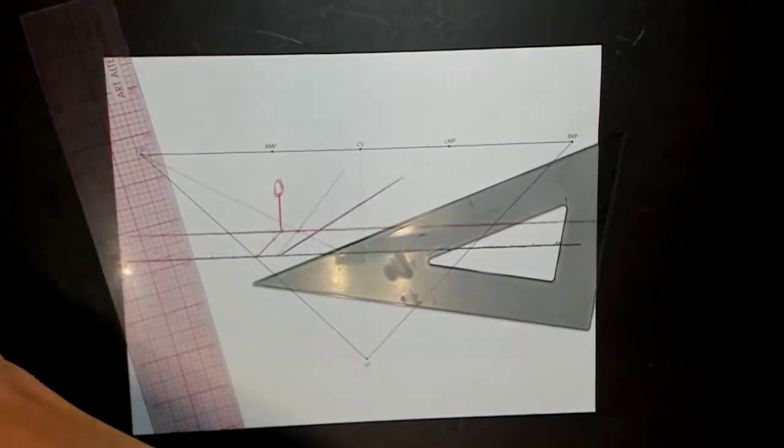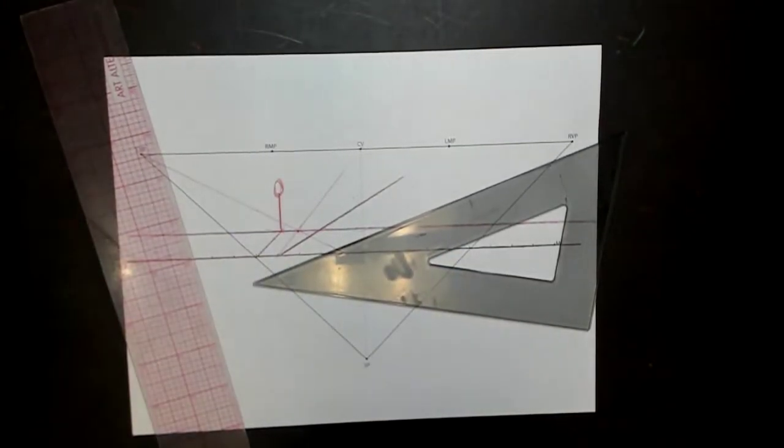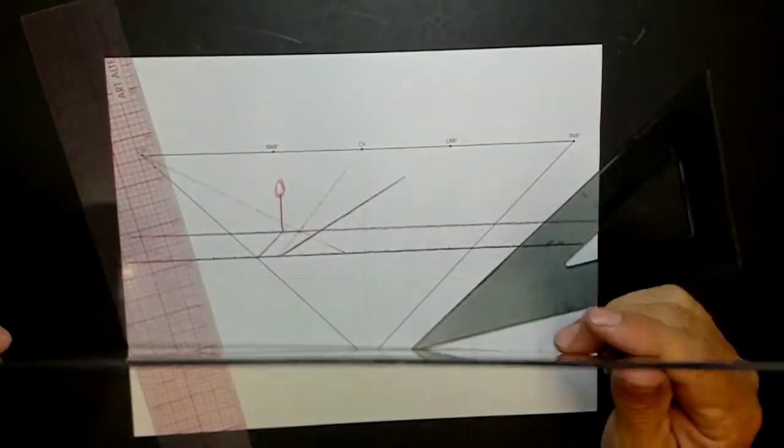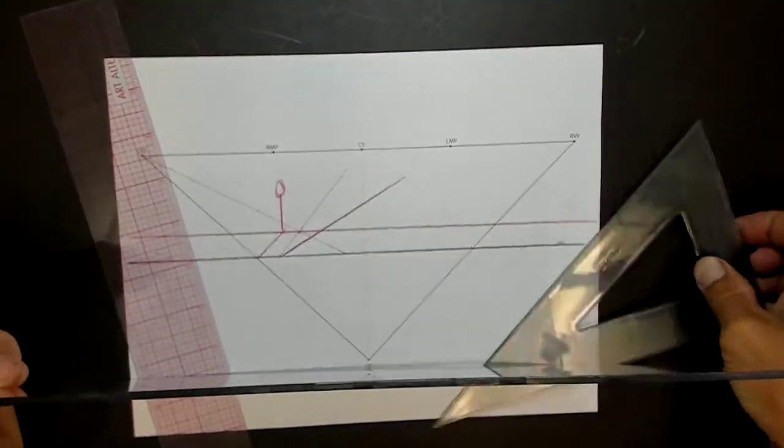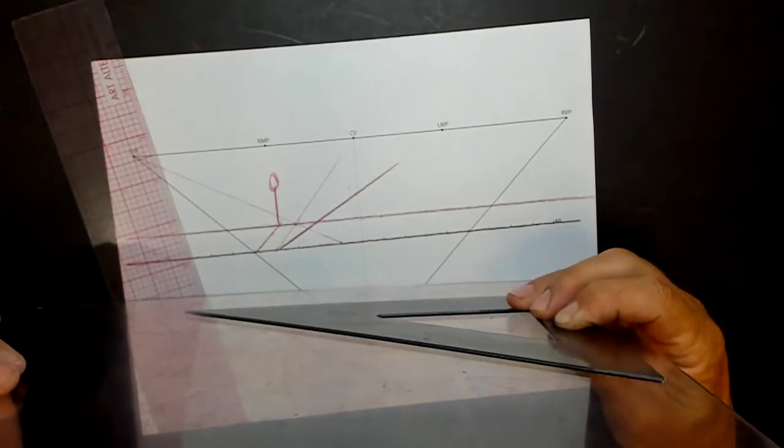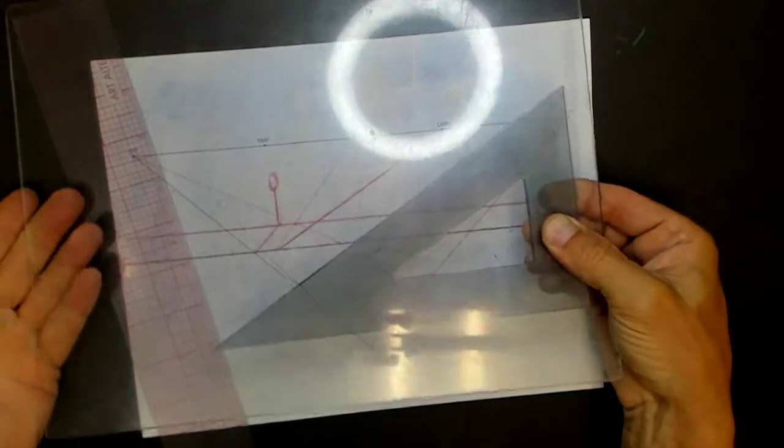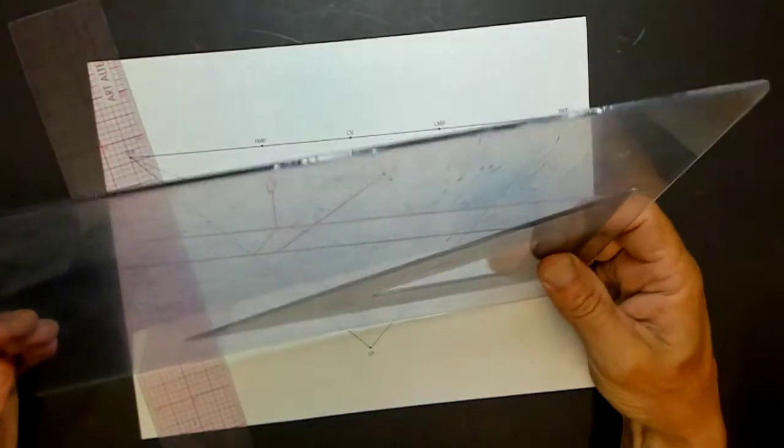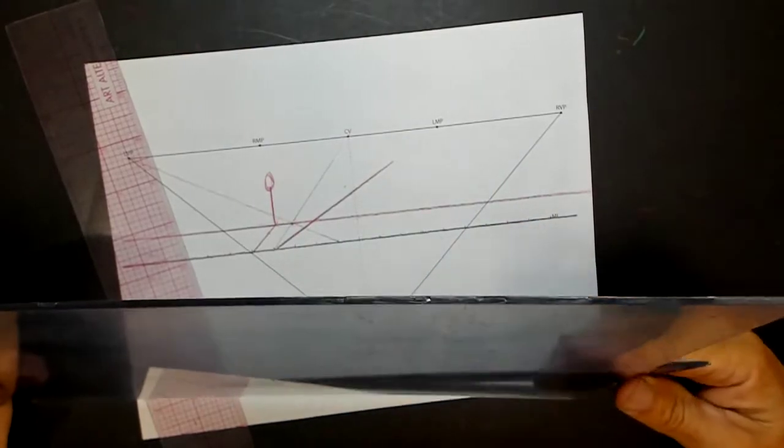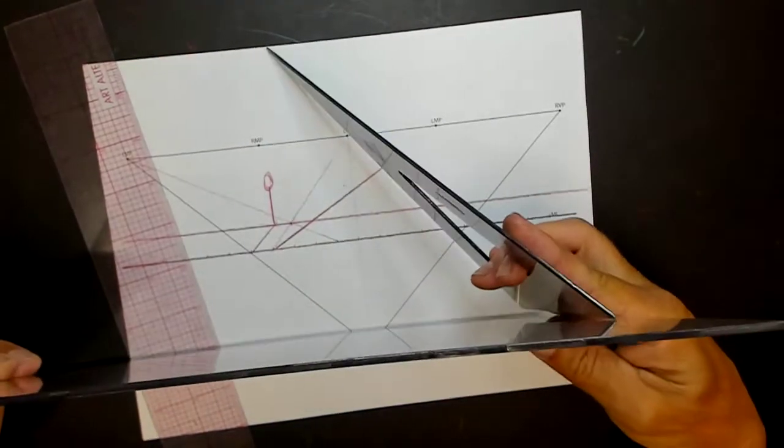Let me see if I can demonstrate this with the camera. Here's my picture plane. If I have a 30-degree angle and it's parallel, you stick it right up against the picture plane like this. I turn it like this - it is an actual 30-degree angle. But if this triangle was not parallel to the picture plane and it was something like this, and then you look at it, now it's in perspective.